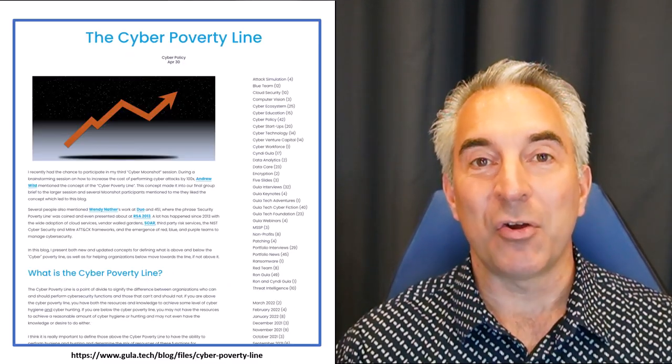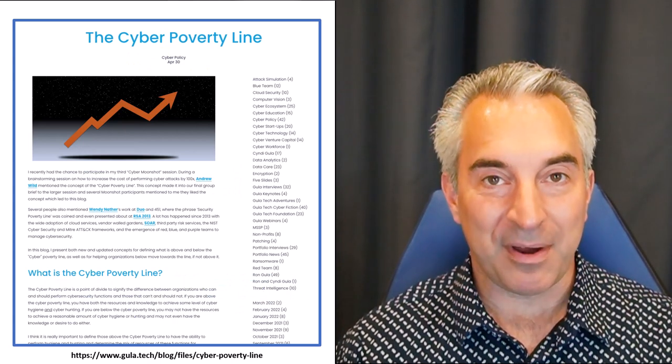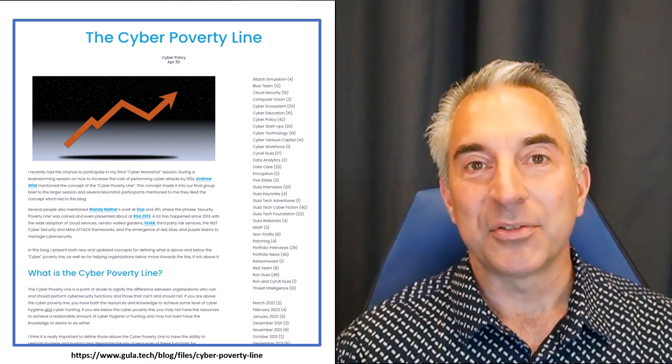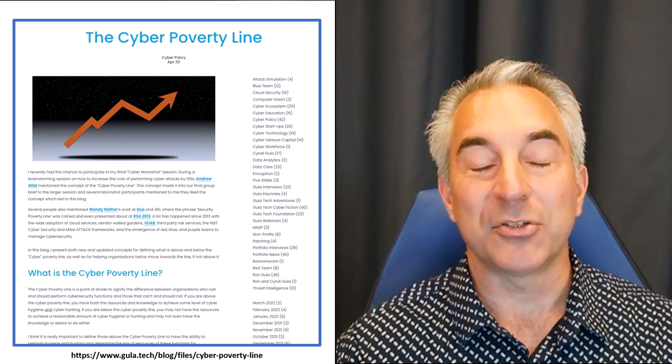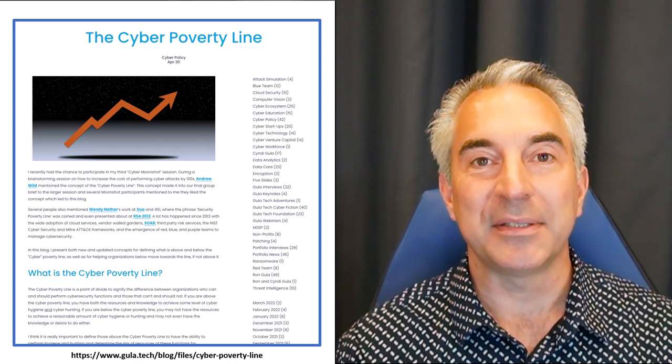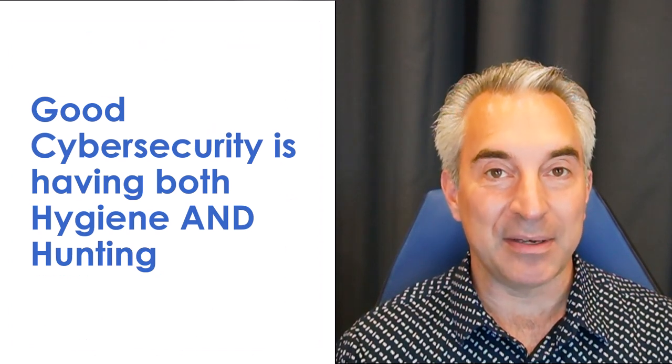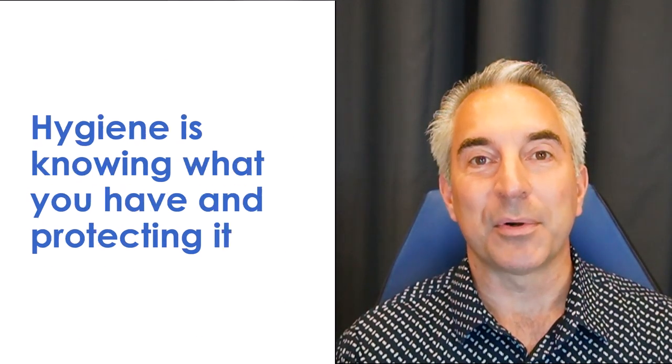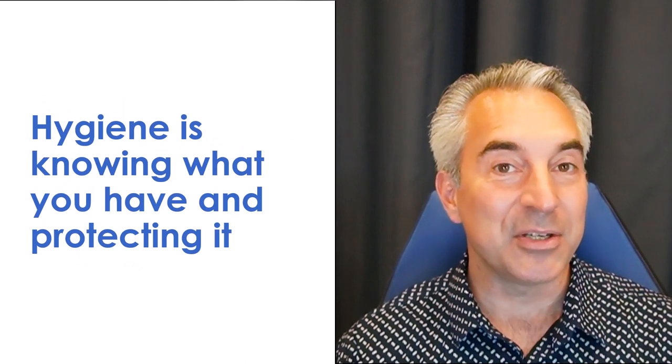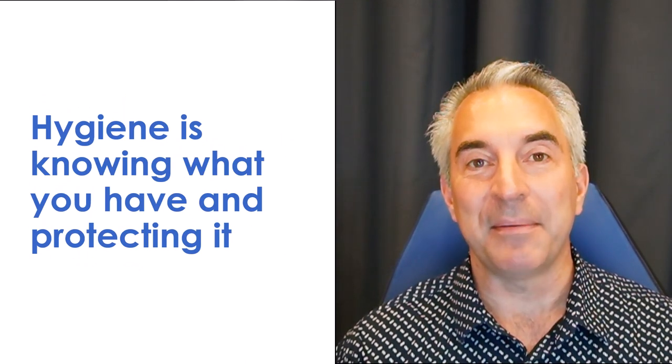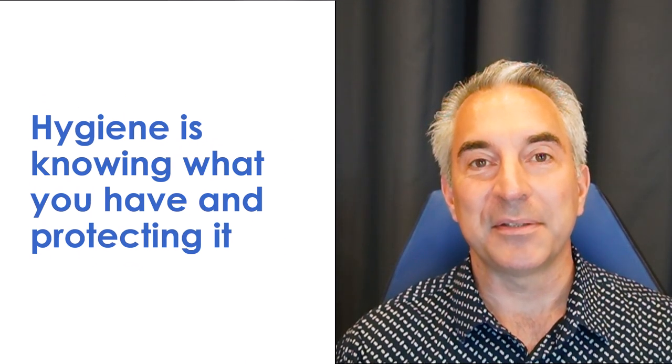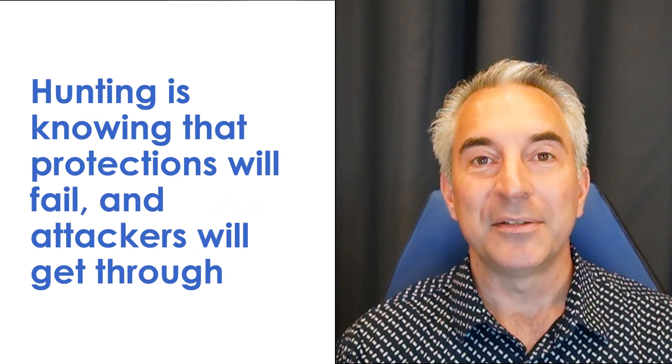A couple years ago, we published our blog, the Cybersecurity Poverty Line, Cyber Poverty Line. Sort of our take on Wendy Nather's security poverty line that basically said, you are above this line if you are doing both hygiene and hunting. Because of course, if you have hygiene, then you know about all your assets, you know how to defend them. But you have to hunt because you can't defend everything. So unless you're doing both, you are below the cyber poverty line.